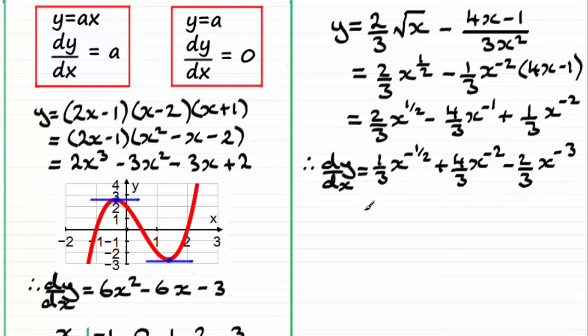And it might be a good idea just to tidy this up. One third x to the minus a half is the same as one over three x to the power half. Four thirds x to the power minus 2 is the same as four over three x squared. And lastly, minus two thirds x to the power minus 3 is the same as minus two over three x cubed. So by putting various values of x into here, we could work out what the gradient at any point x is on this curve.